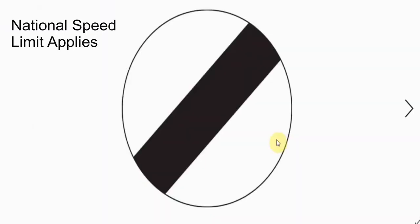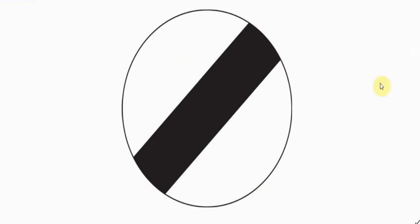Here's a speed limit sign. This sign means national speed limit applies. You'll see this sign where you're driving out of a town area and into a more rural area where the houses finish and, critically, the lampposts come to an end - so there's no street lighting. On a lot of occasions you'll see it on either side of the road. The national speed limit for a single carriageway road where there's no street lighting is 60 mph - that's another question you may get asked in the theory test.